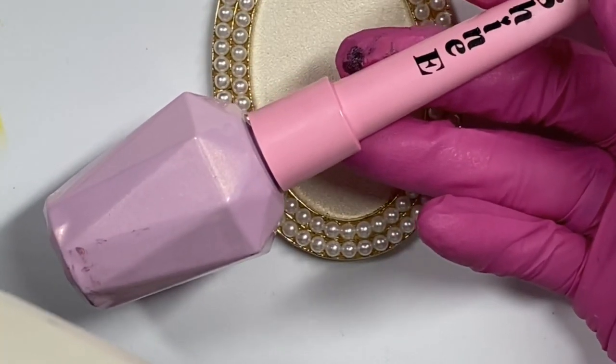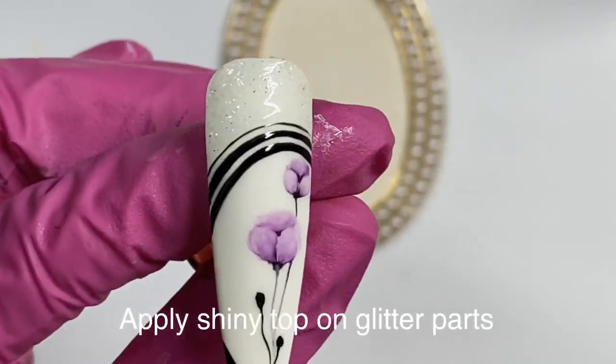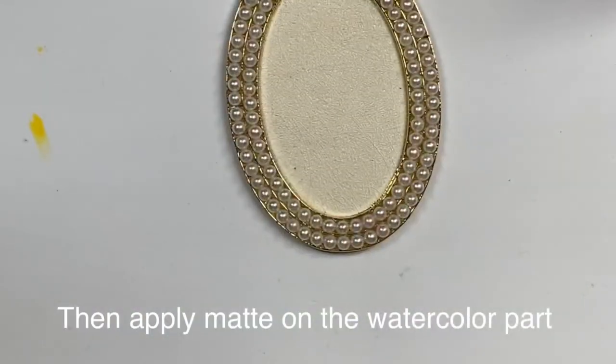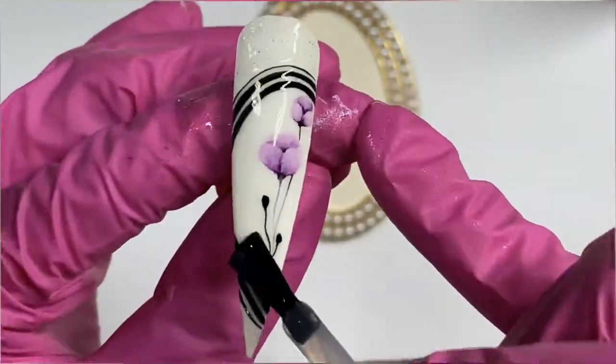Then I'll add glitter on top and bottom of the art and put shiny on top of just the glitter part. And then cure for 60 seconds. After that, I'll apply matte top coat on the watercolor part.